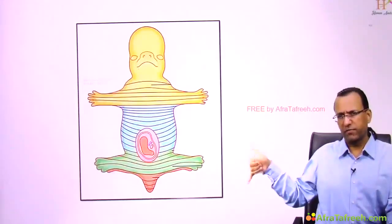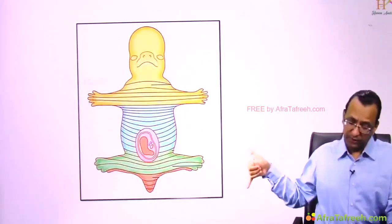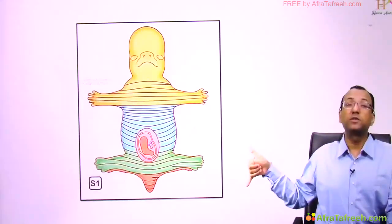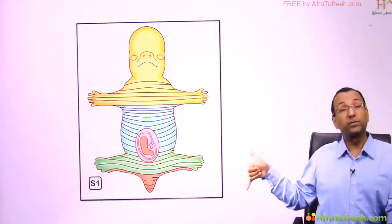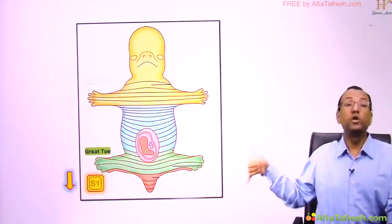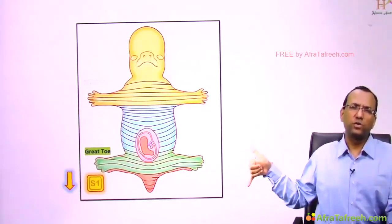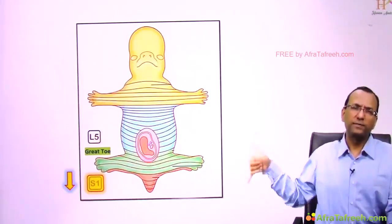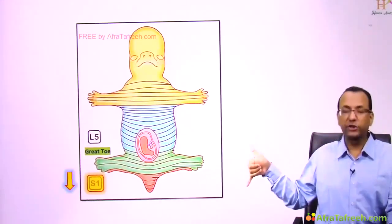What is the dermatome of the little toe? The dermatome of the little toe is S1. If the little toe is S1, then the great toe, being proximal, must have a proximal root value. So the great toe is L5 dermatome and the little toe is S1.